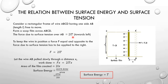Since the soap film has two surfaces, the total force is 2 into L into T. Now if this force moves side AB a distance x, then the work done is equal to force into displacement, which is 2 into L into T into x.